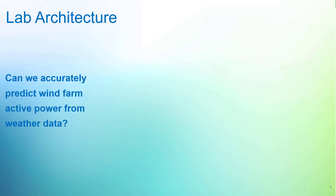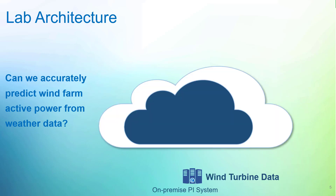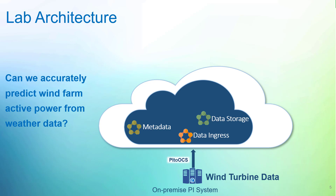In order to answer this challenge, we will first analyze wind turbine data in an on-premise PI Asset Framework database, and then stream the required PI points from the PI Data Archive to OCS via the PI2OCS agent. We will then explore the features and functionalities in OCS, add metadata to our data streams, then create a data view.